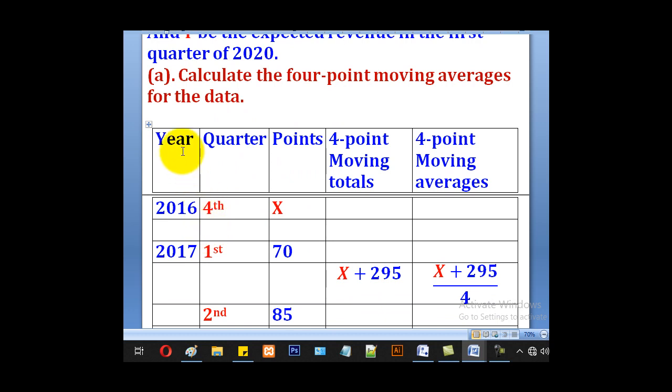We are given the years, so you put a column for years. Then we are given the quarters, you put a column for quarters. You are also given the points, so you put a column for points. What you are left with is how to calculate the 4 point moving totals and the 4 point moving averages.